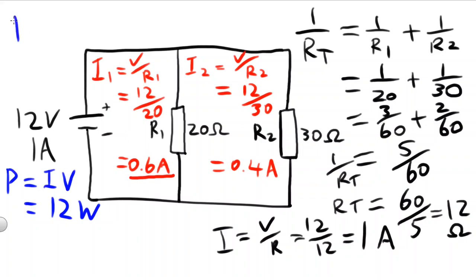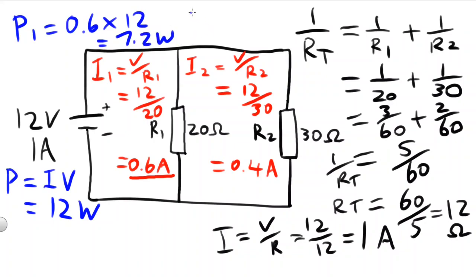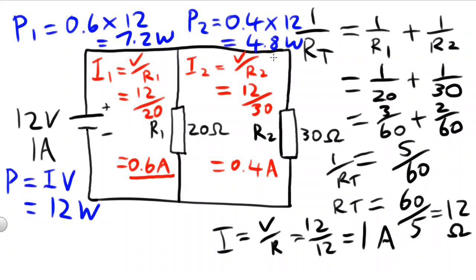For the power dissipation for each resistor, P1 will equal I times V, which will equal 0.6 times 12, which equals 7.2 watts. For resistor 2, the power will equal I times V, so 0.4 times 12, which will equal 4.8 watts. 7.2 plus 4.8 equals 12 watts.